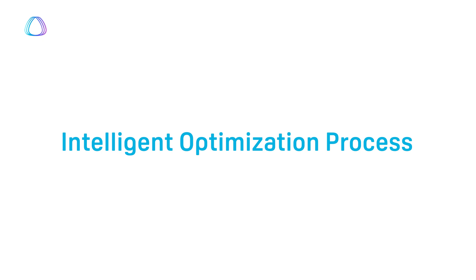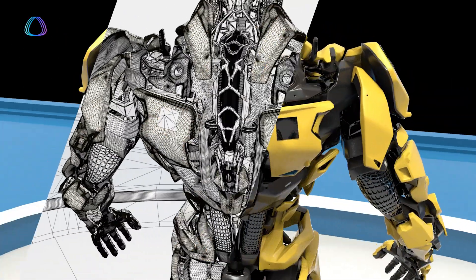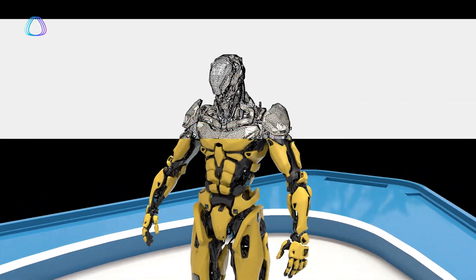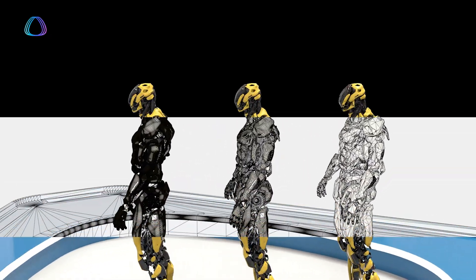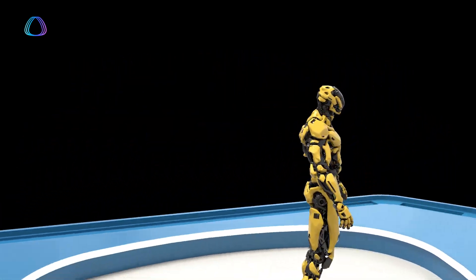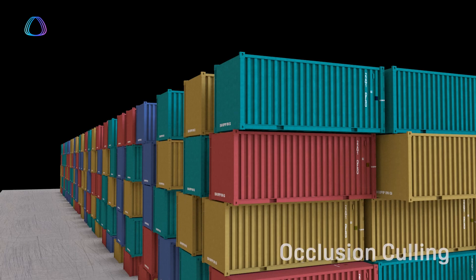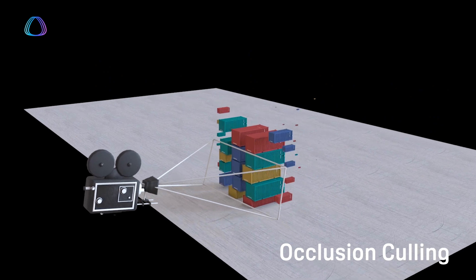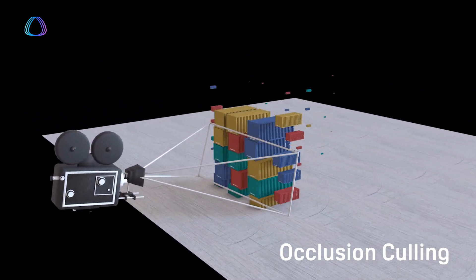One of the ways we help overcome these barriers is through our intelligent optimization process. We do not remove any of the details from the original asset — we retain all of those polygons, all those texture maps, all that material information. When visualizing these high-fidelity 3D models, we employ occlusion culling: we only use resources to visualize what we see, not what we don't, making us adaptive across all devices.